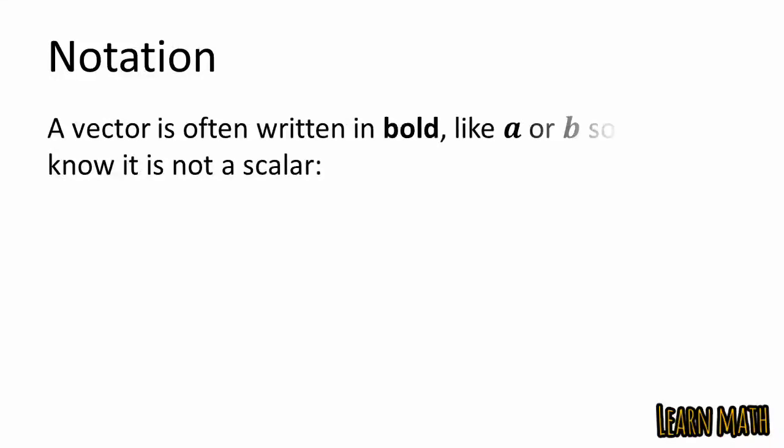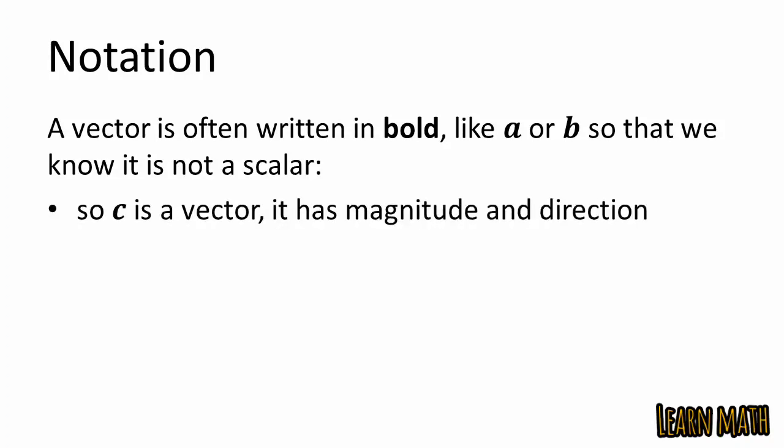A vector is often written in bold, like A or B, so that we know it is not a scalar. For example, C written in bold is a vector with magnitude and direction, but C written in italic form is a scalar — like 3 or 12.4 — which has no direction but only magnitude.